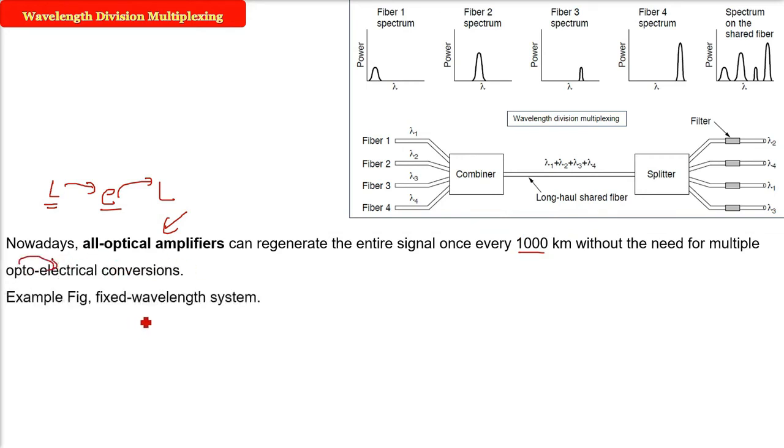So, we have fixed wavelength system. For example, in this figure, if you say bit from input fiber 1, there it is going to output fiber 3 and the bits from input fiber 2 go to output fiber 1. Fiber, different spectrums are there. When they are combined, these are the spectrum on the shared fiber.